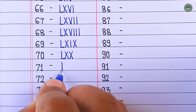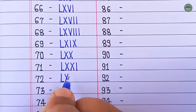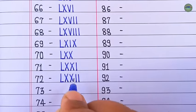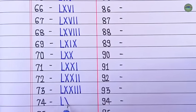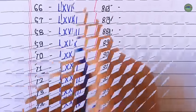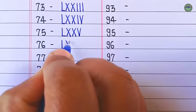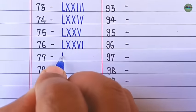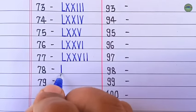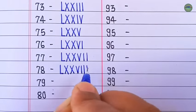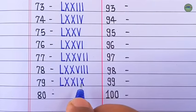71 is LXXI, 72 is LXXII, 73 is LXXIII, 74 is LXXIV, 75 is LXXV, 76 is LXXVI, 77 is LXXVII, 78 is LXXVIII, 79 is LXXIX, 80 is LXXX.